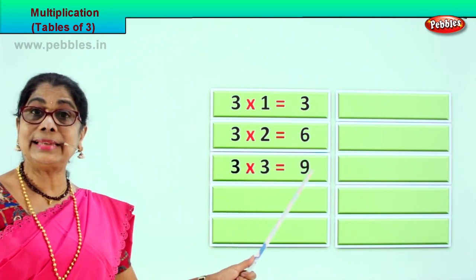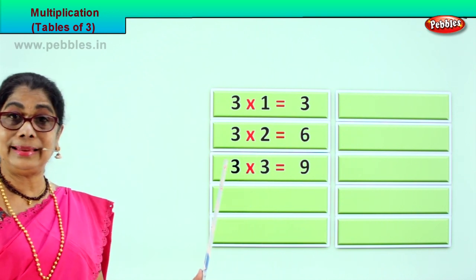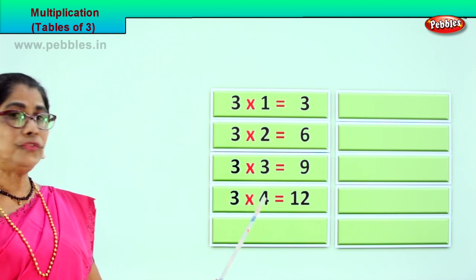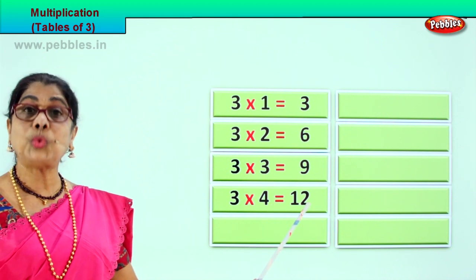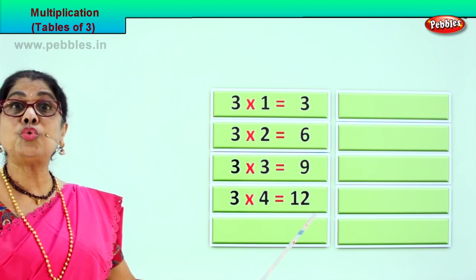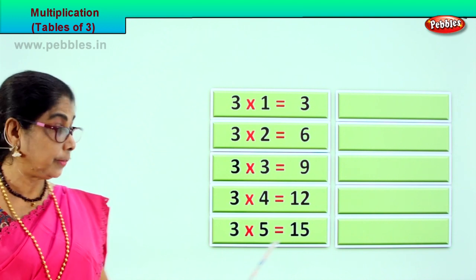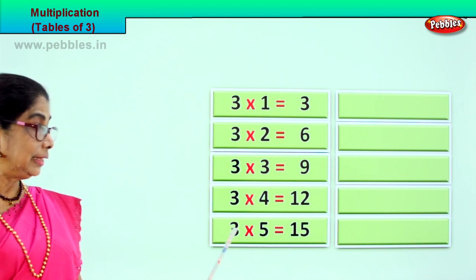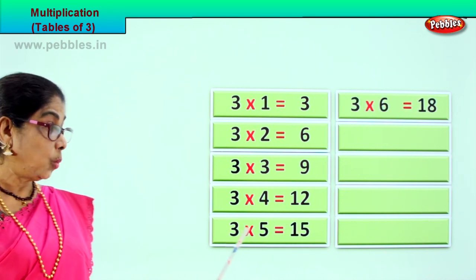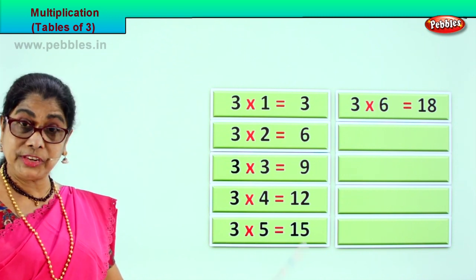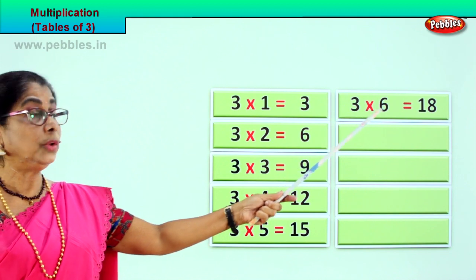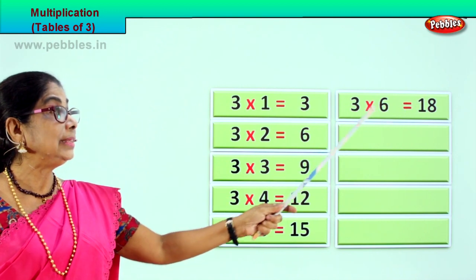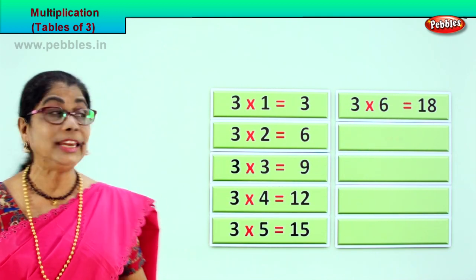Three into three is nine. Three threes are nine. What is three threes are? Nine. Good. Now — three into four is twelve. Three fours are twelve. What is three fours are? Twelve. Good. Five — three into five equal to fifteen. Three fives are fifteen. What is three fives are? Fifteen. Good. Three into six is eighteen. Three sixes are eighteen. What is three sixes are? Eighteen. Good.